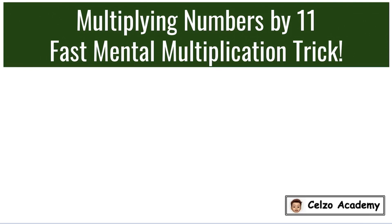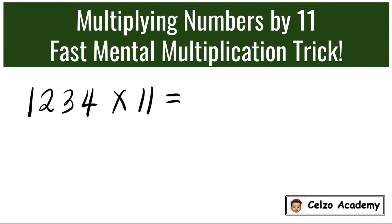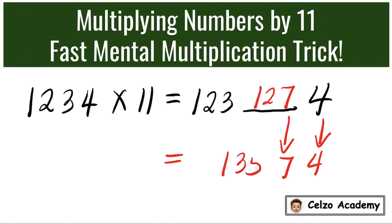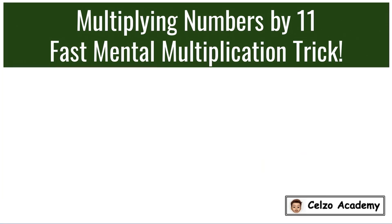Now let's try it with 4-digit numbers: 1,234 times 11. The first step is to write down 123, space, and then the 4. Next, add 123 plus 4, which is 127. To write the final answer, copy the 4, bring down the 7, and add 123 plus 12, which is 135. So the answer is 13,574.